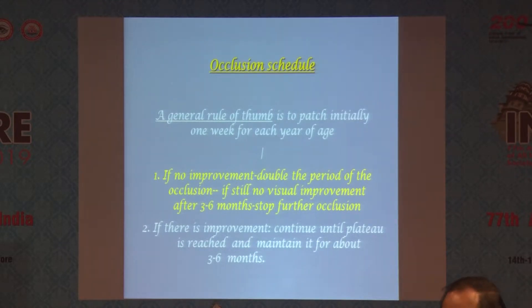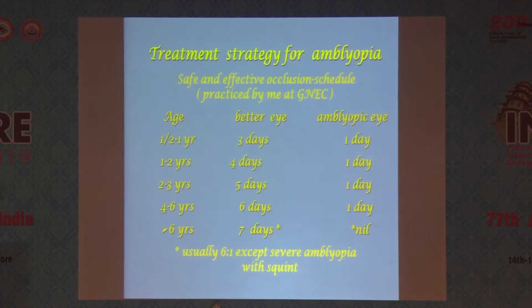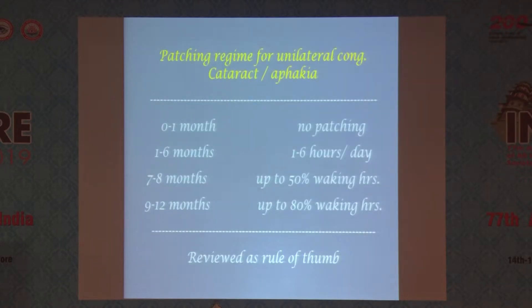If there is improvement, continue the treatment until one-to-one visual acuity is achieved, then maintenance for three to six months. This is the approach I follow for occlusion therapy at my center, the Guru Nanak Eye Center. This is for children.